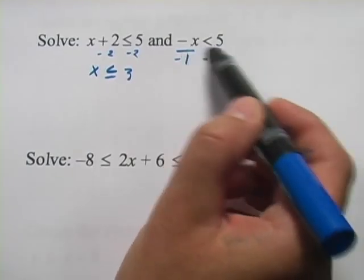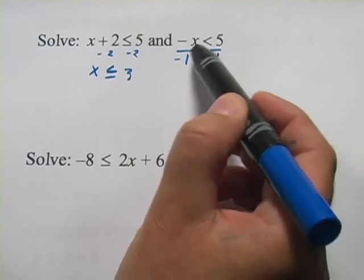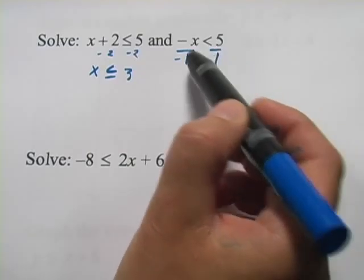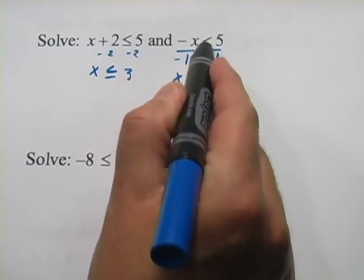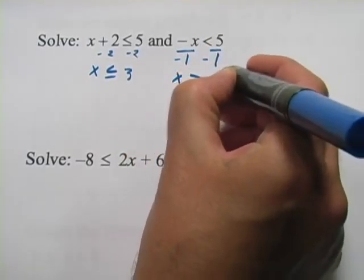But you have to remember that when you multiply or divide by a negative 1 and it's an inequality, you've got to flip the inequality sign. So over here I get a positive x. I flip the inequality sign so it becomes a greater than and over here I get a negative 5.